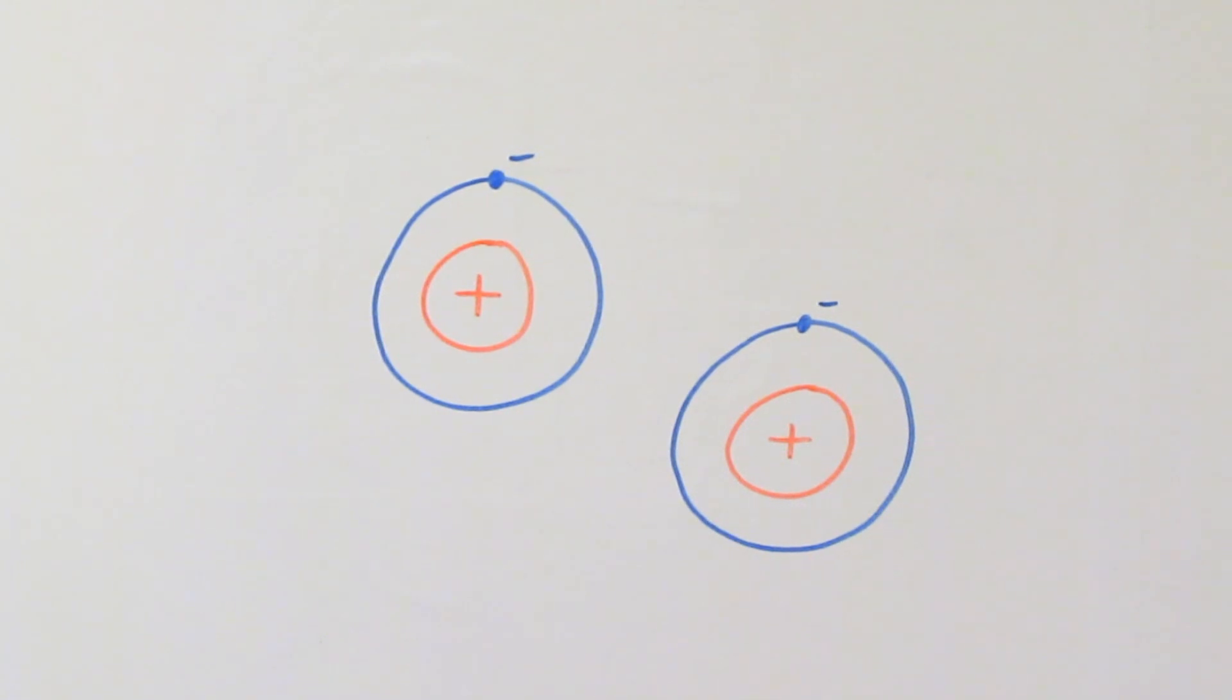Now that sounds quite simple, but actually these atoms don't particularly want to join onto each other, and so you've got to get them pretty hot before they do that. First, you've got to heat these atoms up so much that their electrons escape, and you're just left with the atomic nuclei, just those positively charged atomic cores.